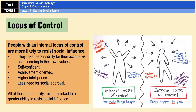People with an external locus of control are more likely to be affected by the pressure to conform or obey, and are less likely to show independent behaviour, because they believe that what happens to them is controlled by external factors and that they don't have complete control over their life. Therefore, they're less likely to take responsibility for what happens to them.